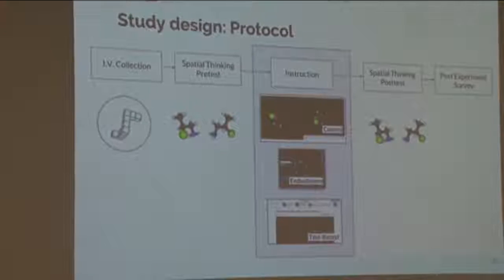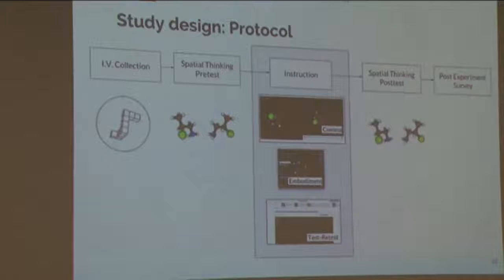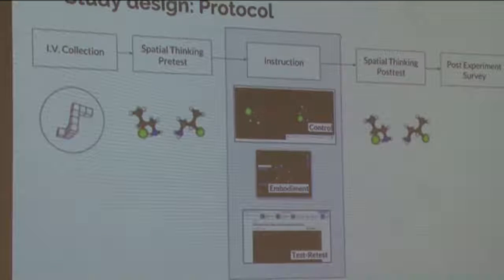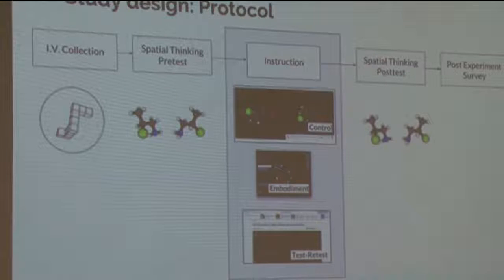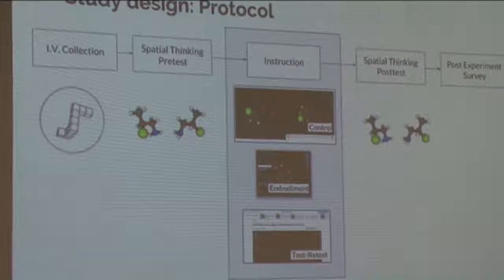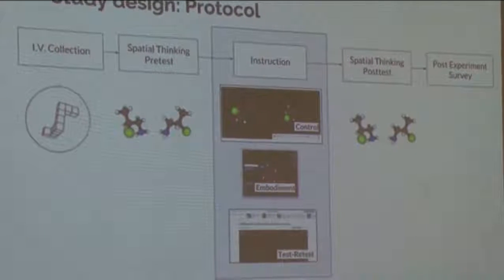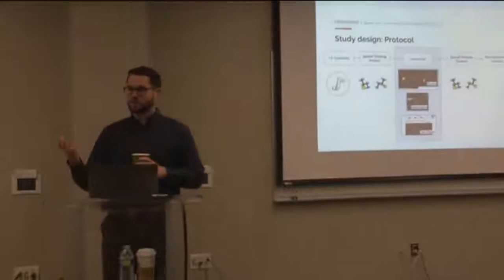I used a pretest-intervention-posttest design, collecting the same demographic information and using the same three subscales — geometry, symmetry, and transformation — on the spatial thinking pretest and posttest. In this study, geometry and symmetry were not instructed; I was only instructing students on transformation, including them only for further information about the test-retest issue. Due to anatomical limitations with computer vision — if someone's face tilts away from vertical it loses them entirely — I could only test rotation around the x-axis and y-axis, plus a vector in the x-y plane. I added four more transformation items, giving 16 items total for that subscale.